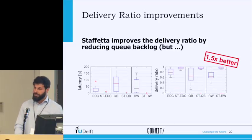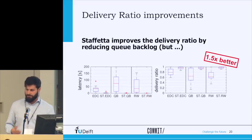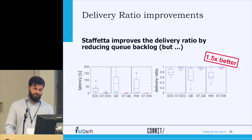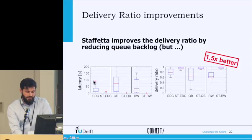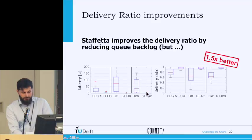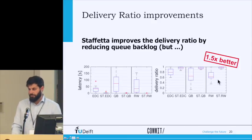Second, the delivery ratio. We improve it because we reduce the queue backlog of packets. Because our nodes are a lot more active, they deliver messages faster. The improvement in delivery ratio mirrors the latency improvement across the three metrics — in this case about 1.5 times better.